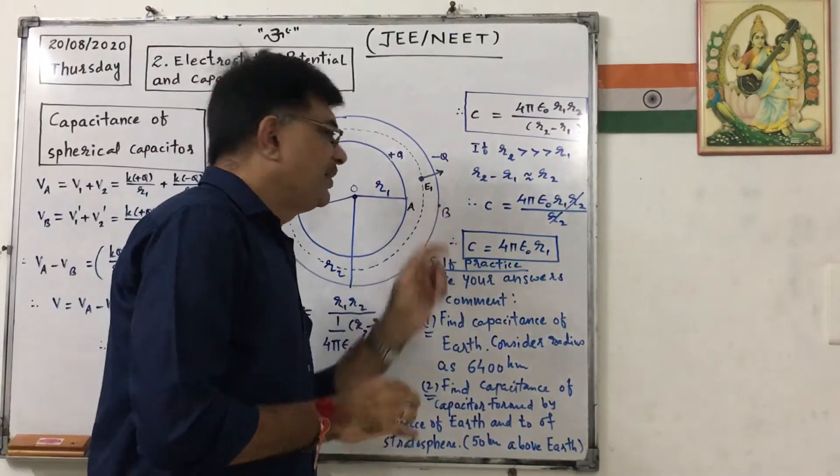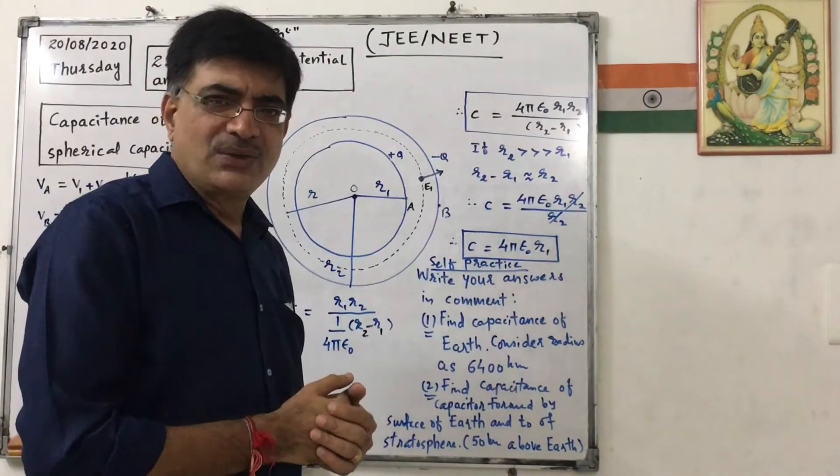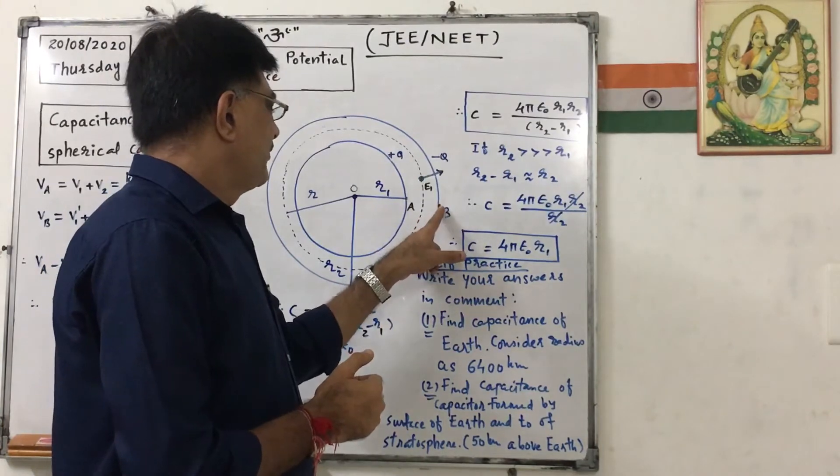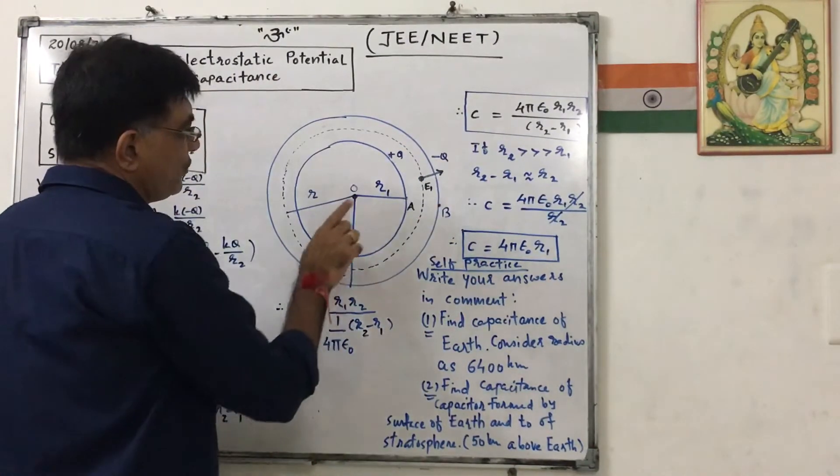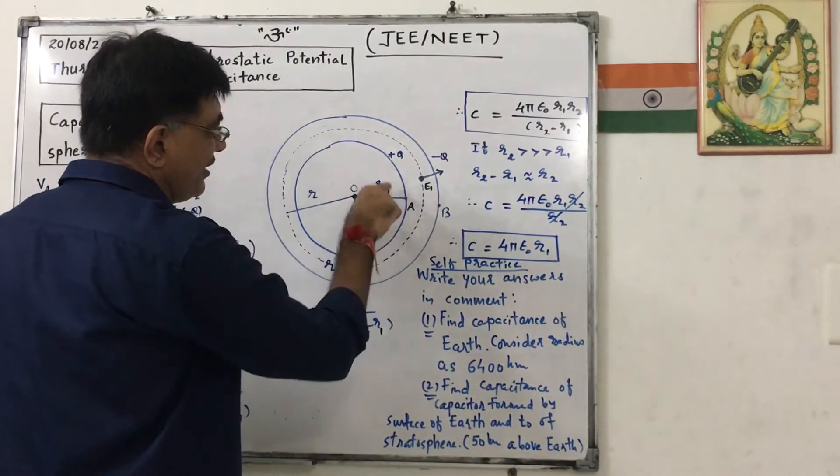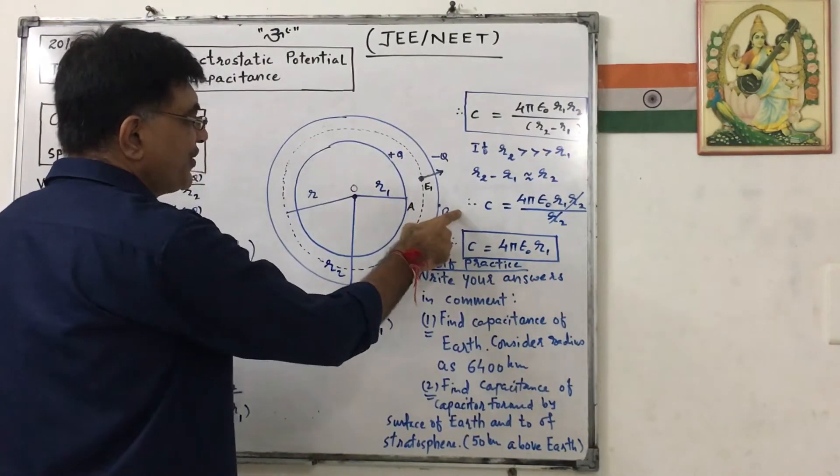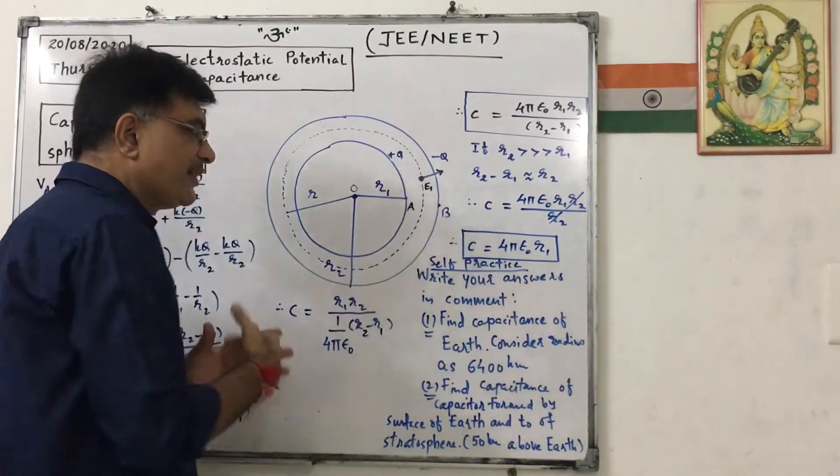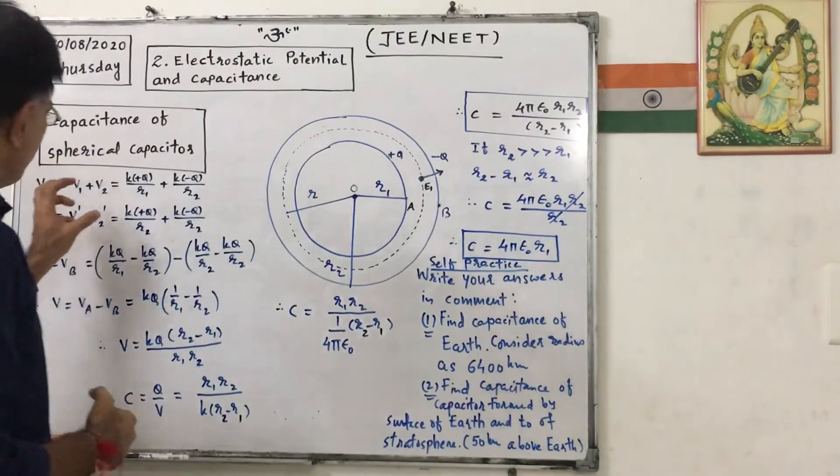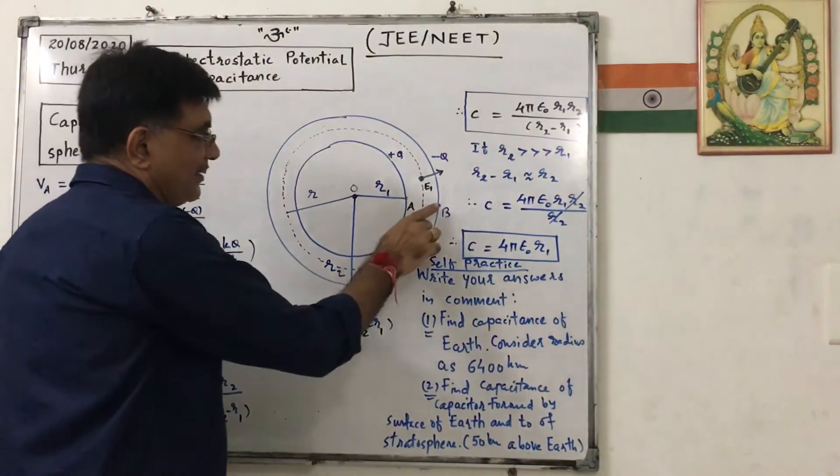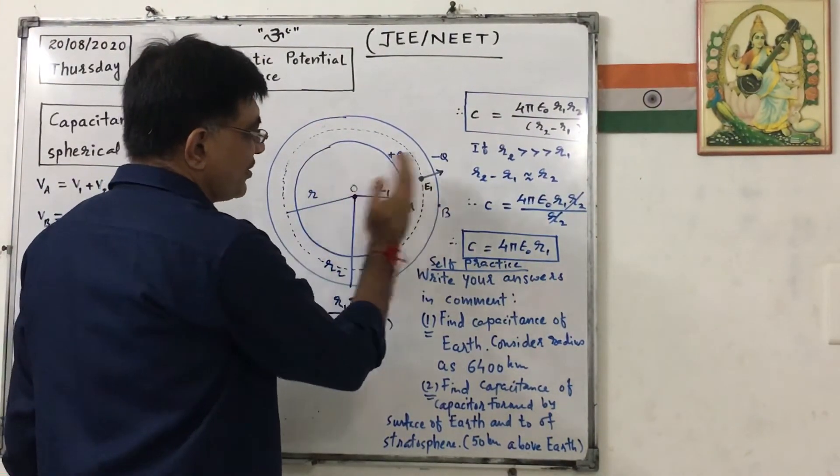Now if I consider point B on outer shell, then V at B will be equal to potential due to this smaller shell is V1 dash and potential due to this outer shell is V2 dash. So it is V1 dash plus V2 dash. Now see, this point is outside of this shell.